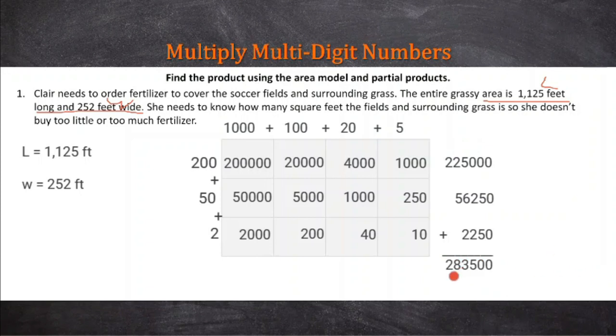So we have 283,500. But is that the answer? Well no, because we don't have the units here. If we have feet times feet, we're going to have square feet. She needs to know how many square feet so she doesn't buy too little or too much fertilizer. Claire needs enough fertilizer to cover 283,500 square feet. She can look at how many square feet does a bag of fertilizer cover, or how many tons of fertilizer will it take to cover 283,500 square feet.